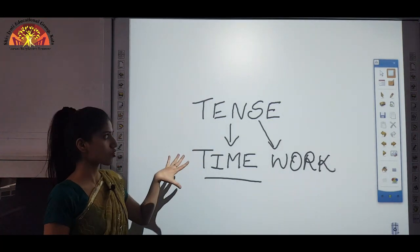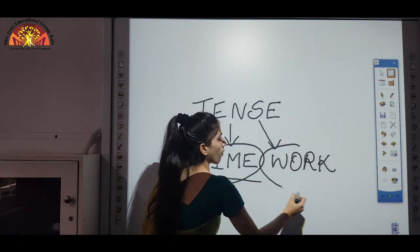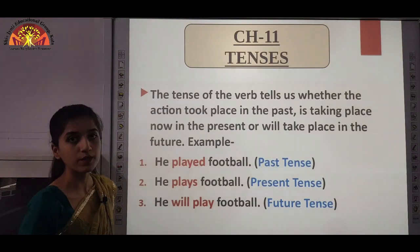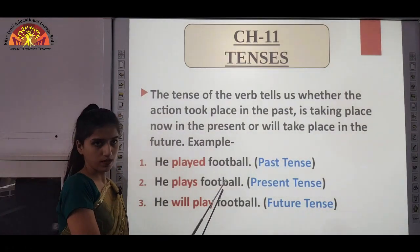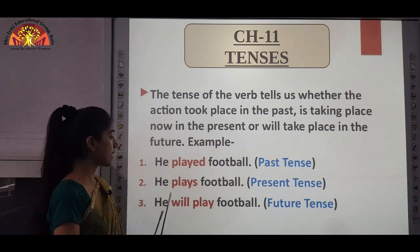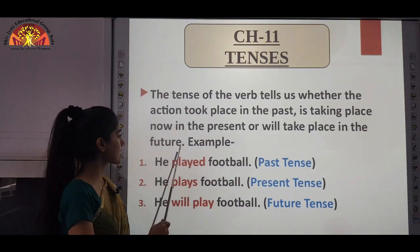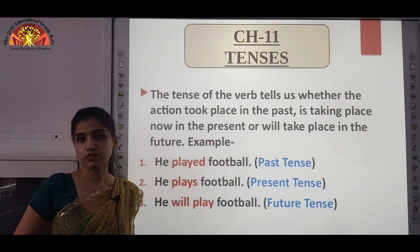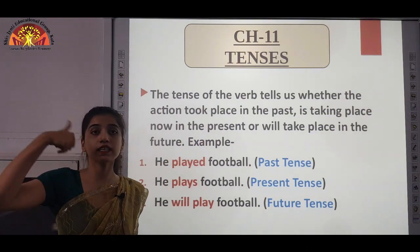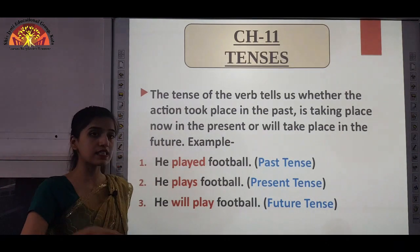In this topic — tenses — we are going to study about time and work. Let's see the examples: 'He played football,' 'He plays football,' and 'He will play football.' In the first sentence the verb denotes the action was done in the past. 'He played' — usne football khela tha — that is the action done in the past.